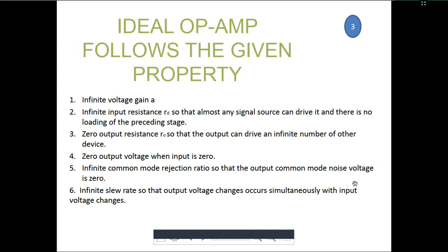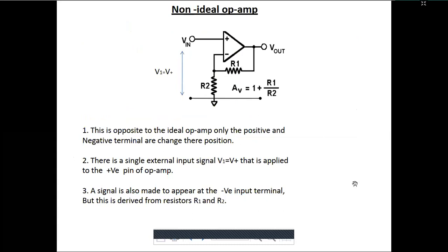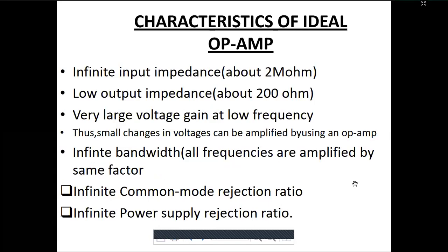Non-ideal op-amp is the practical one, opposite to the ideal. In the non-ideal model, the positive and negative terminals change their positions. A single external input V1 = V+ is applied to the positive terminal while the negative is grounded. A signal also appears at the negative terminal derived from resistors R1 and R2. This is the practical configuration, with clear differences from the ideal theoretical model.